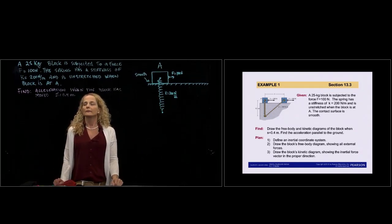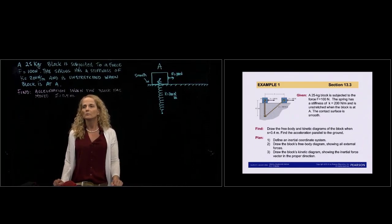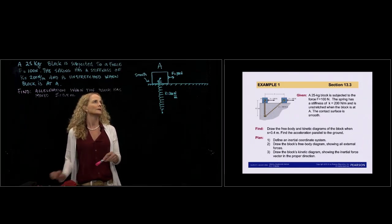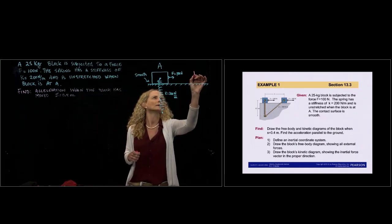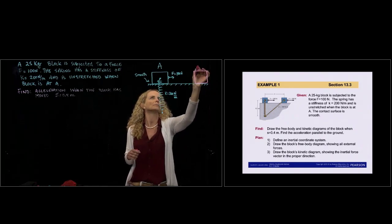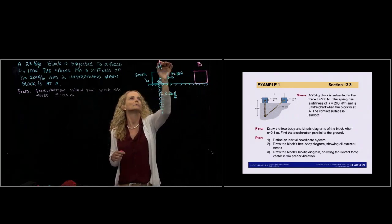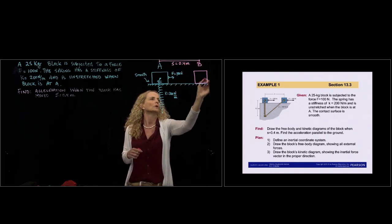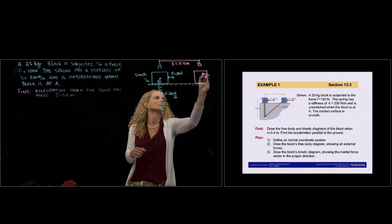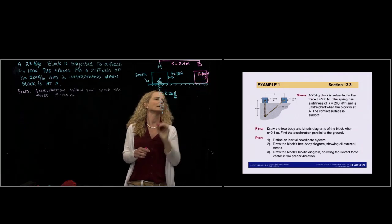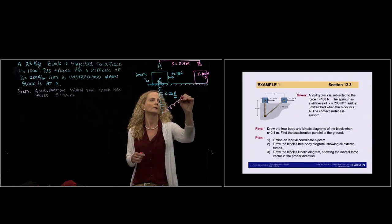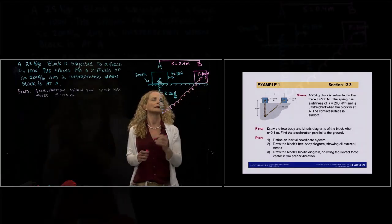We have been asked to find the acceleration when the block has moved S equals 0.4 meters. So we want to find the acceleration when our block is in position B, and from position A to position B, S is equal to 0.4 meters. We have the same force applied right there, and now our spring is not unstretched anymore — it's elongated.